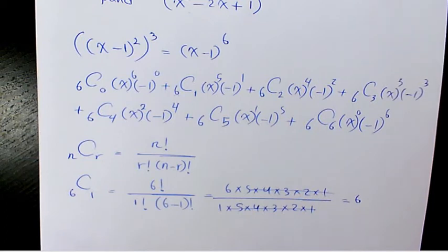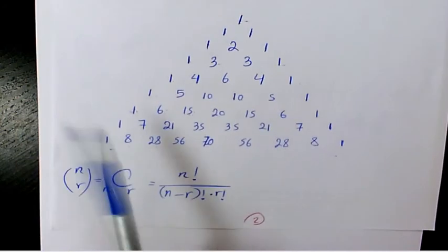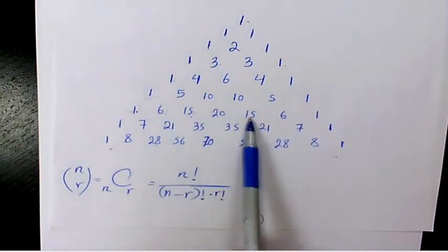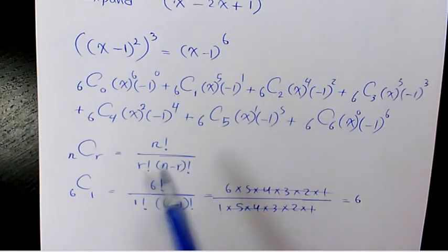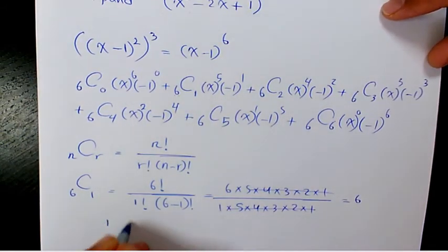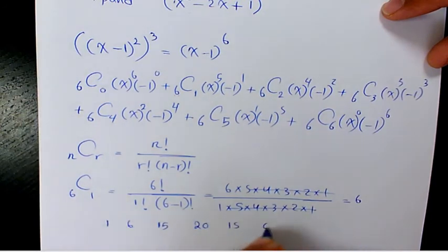When you use Pascal's Triangle you need to find the 6th row and then find the numbers which are 1, 6, 15, 20, 15, 6, and 1. So as you see here we have 7 of them. So it's 1, 6, 15, 20, 15, 6, 1. So we substitute them there.